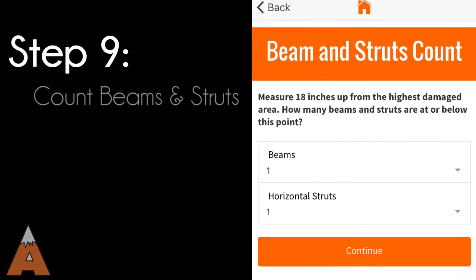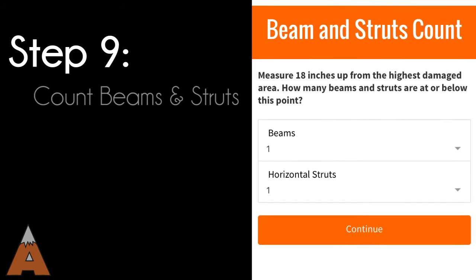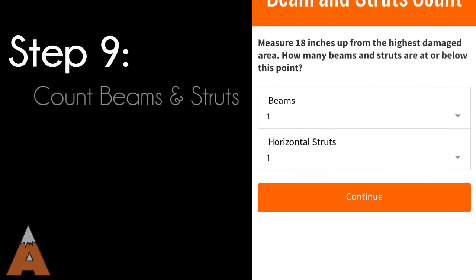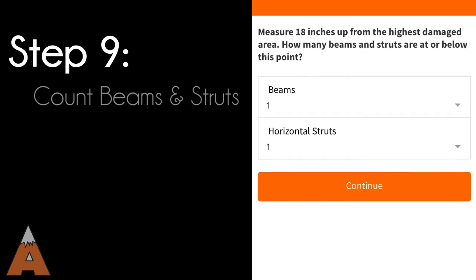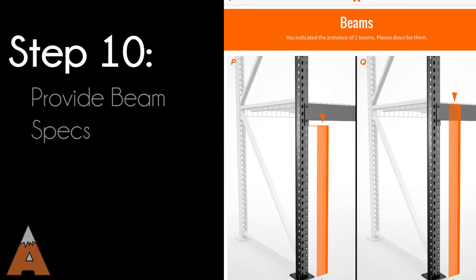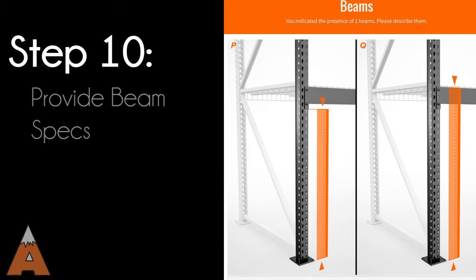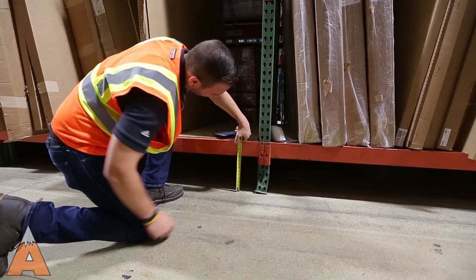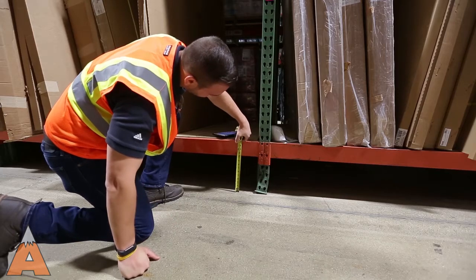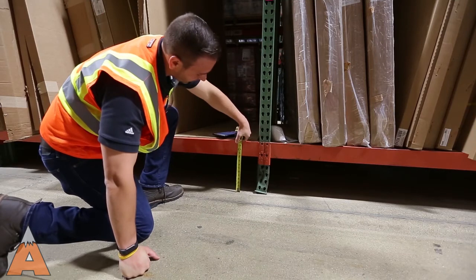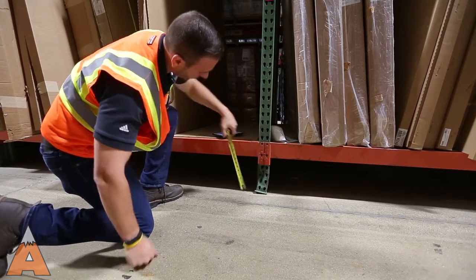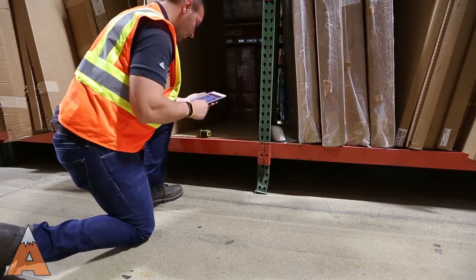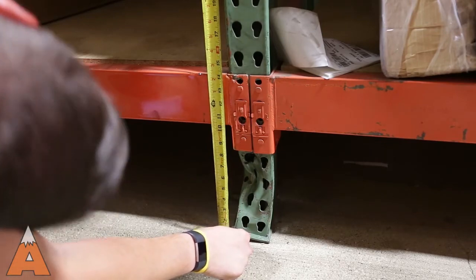Next, measure 18 inches up from the highest damaged area and count the number of beams and struts included below this point. You will also need to provide the specs for beams located within the damage area. Measure from the floor to the bottom of the beam bracket and from the floor to the top of the beam. These measurements are required for each beam below the damage area indicated on the previous screen.